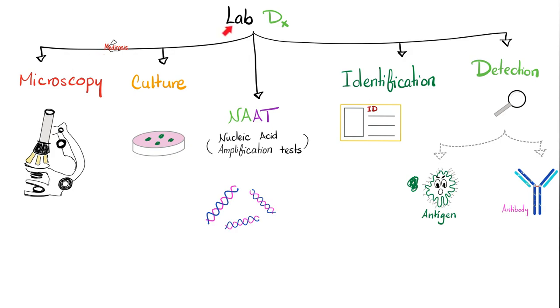How do we diagnose any bacteria? Medicosis has a system. It's either microscopy, culture, NAAT — which is a DNA test — identification, or detection. You can detect the antigen, a part of the bacteria.